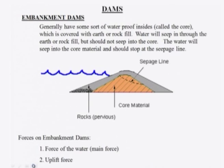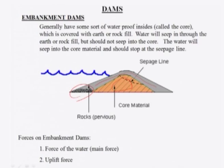Embankment dams generally have some sort of water-proofing inside called the core. This core is covered with earth or rock fill. Water will seep through this earth or rock fill but should not seep into the core. Water passes through the outer earth or rock fill and should stop at the seepage line inside the core.